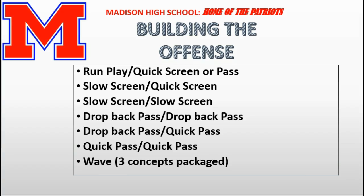This system gives us a lot of options — a lot of ways out. If they roll to another coverage, if safeties are rolling to the box or bailing, or corners are bailing, we have a lot of different ways to attack. The third concept is what we call the wave package. In the wave package, coaches, we take three concepts and package them together. For example, we might call inside zone as the run, then attach a now screen or bubble screen, and the third option is the quarterback — if he pulls, he can run.